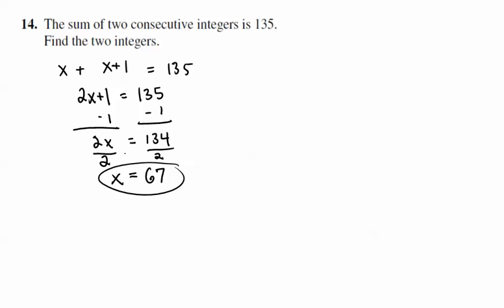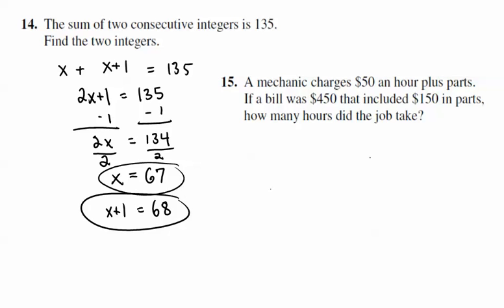And so that'll do it for that problem. So for number 14, we have x equals 67, but it asks for the two numbers, the two consecutive integers. So the first one would be 67, the second one would be one more than that, which is 68.